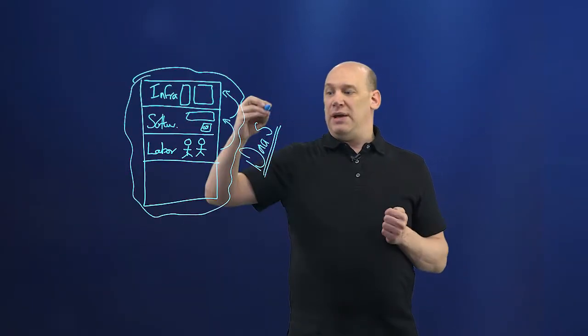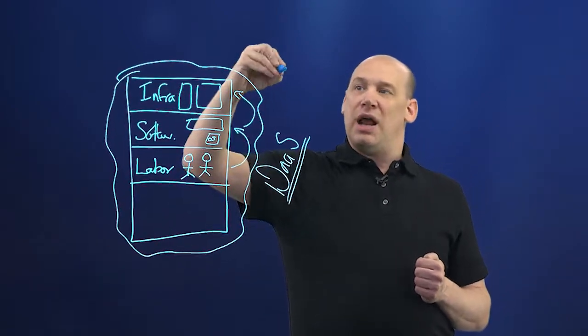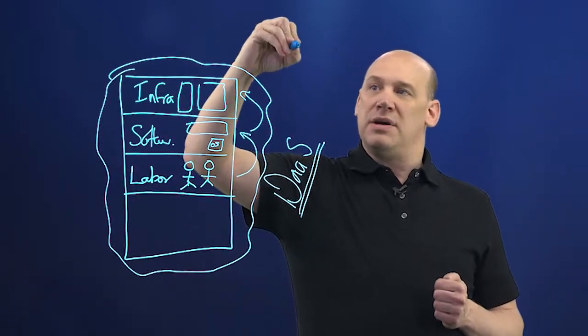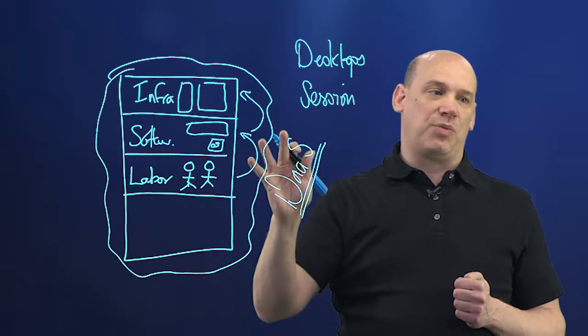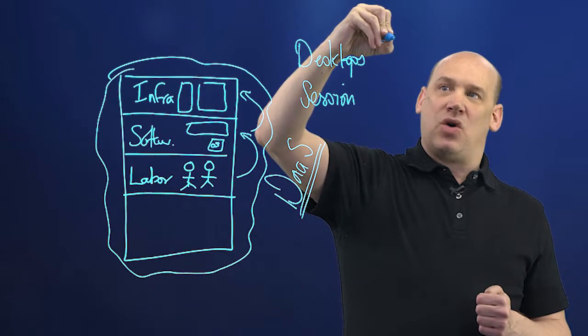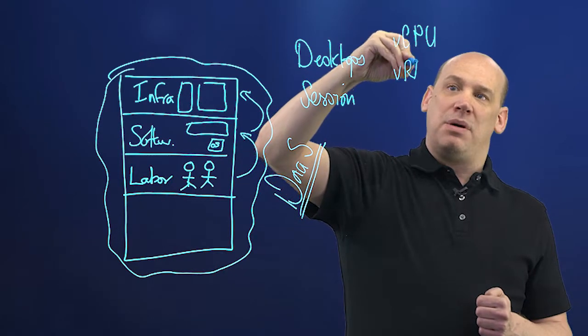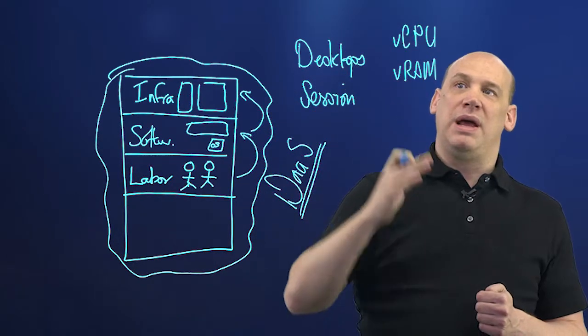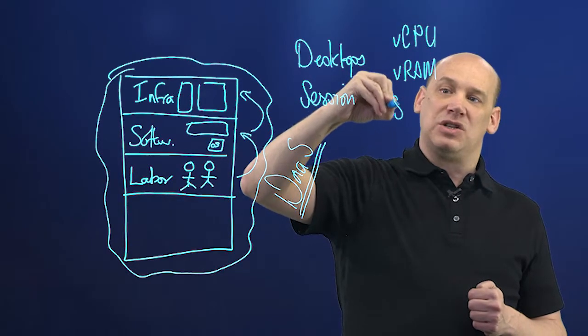Desktop as a service with all of these combined costs allows us to provide desktops and sessions at individual price points. This allows us to provide a price point based on the CPU, based on vRAM (the amount of memory and compute that we're providing), and finally storage.